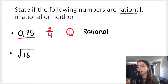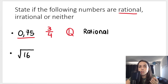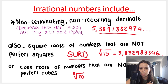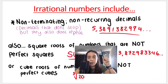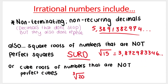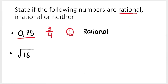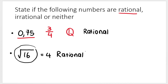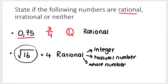Then we've got the square root of 16. You might remember from my previous video that I said square roots can be included as irrational — but I said something very important: square roots of numbers that are not perfect squares, like the square root of 15. But here I'm talking about the square root of 16. Always see if you can simplify it further. So I get four, and four is definitely a rational number. Not only is four rational, it can also be classified as an integer, as well as a natural number and a whole number.